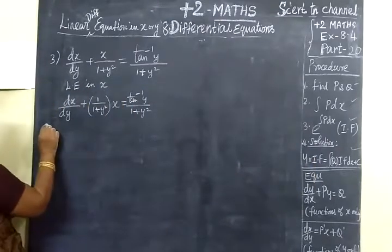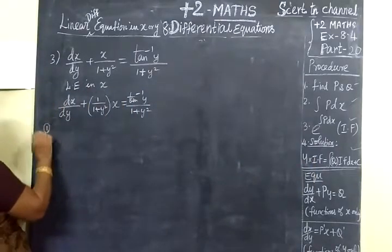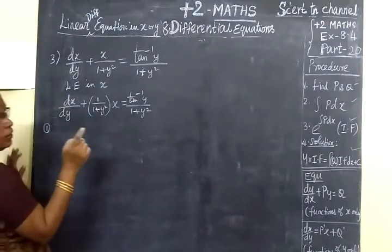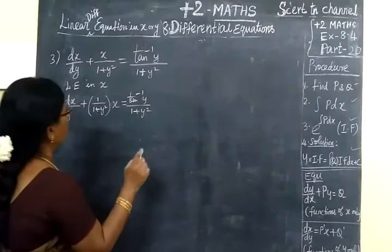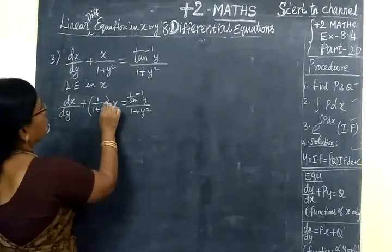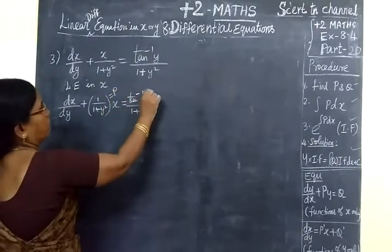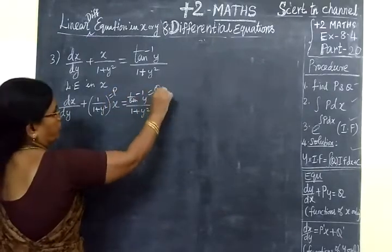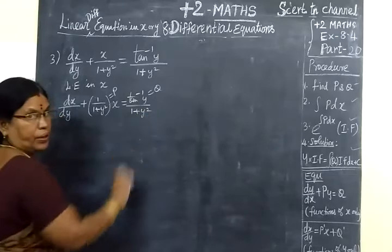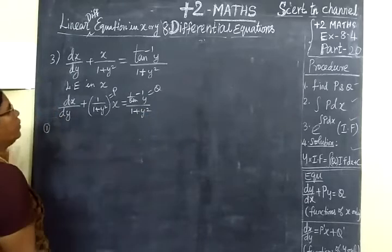Now, what is the first stage? Identifying P and Q. So this is P and this is Q.